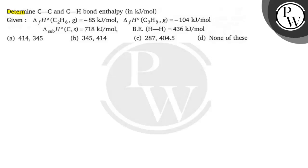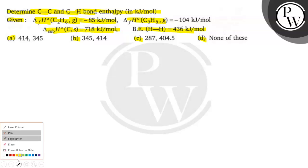Let us read this question. Determine CC and CH bond enthalpy in kilojoules per mole, given the delta H naught of formation of ethane, delta H naught of formation of propane, delta H sublimation of carbon, and bond energies of hydrogen. From all these values, we need to calculate CC and CH bond enthalpy. So let us solve this question.